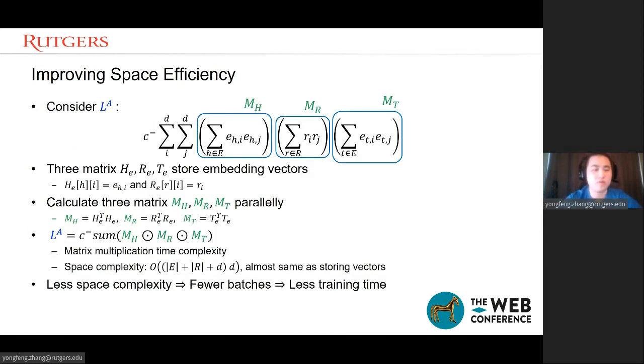Here we show how we improve the space efficiency. We use three matrices, HE, RE, TE, to store the embedding vectors and calculate the three matrices as the intermediate matrices in parallel. You can see here is the MH, MR, and MT. And we can verify that MH equals to the transpose of HE times HE.